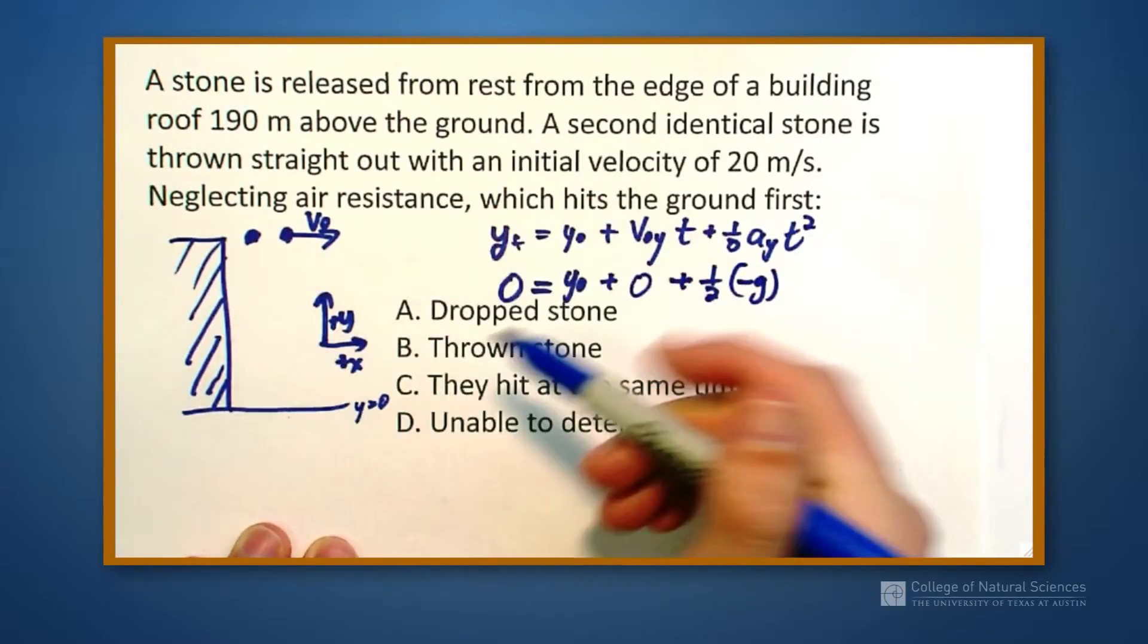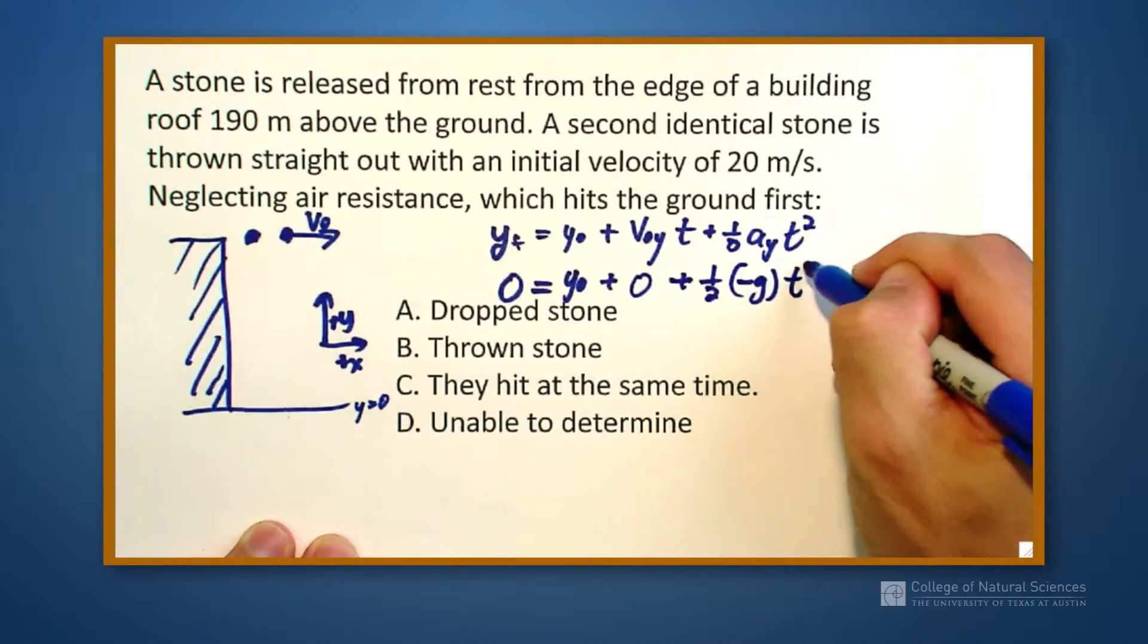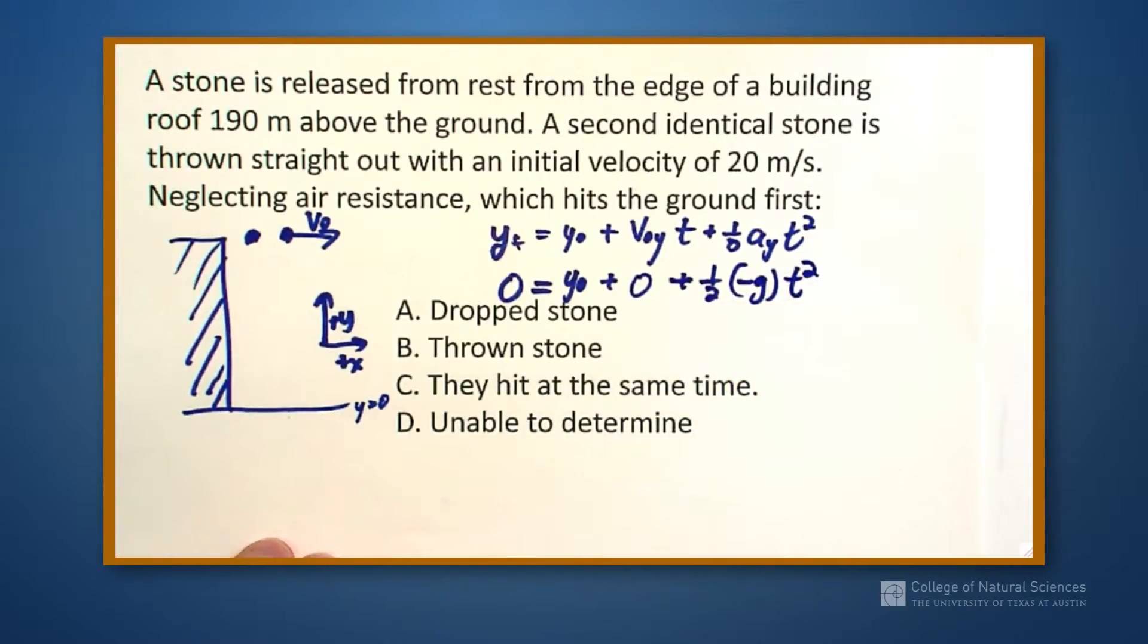Up is positive, so down is a negative g value, t squared. So that would be for the dropped ball.